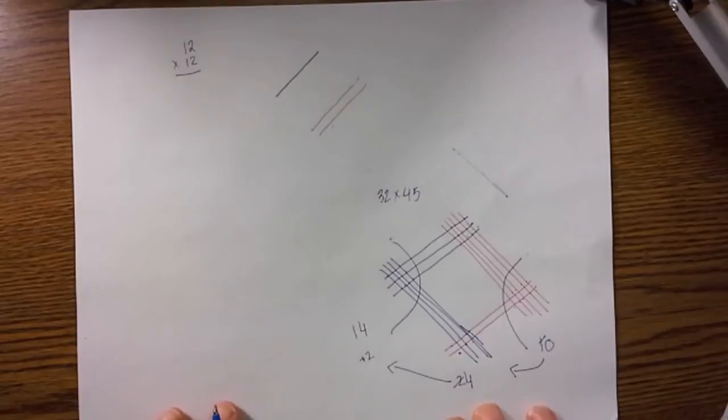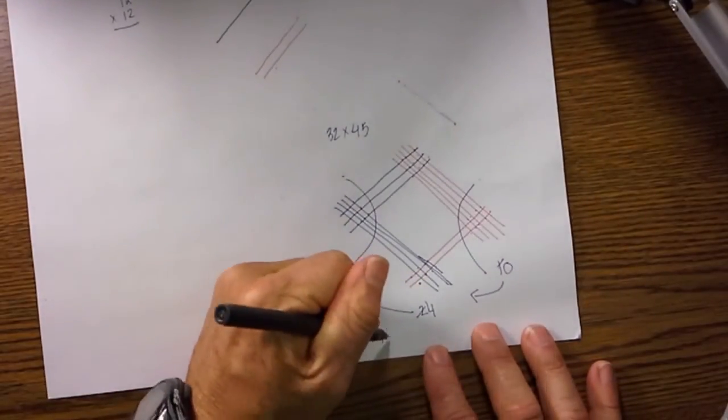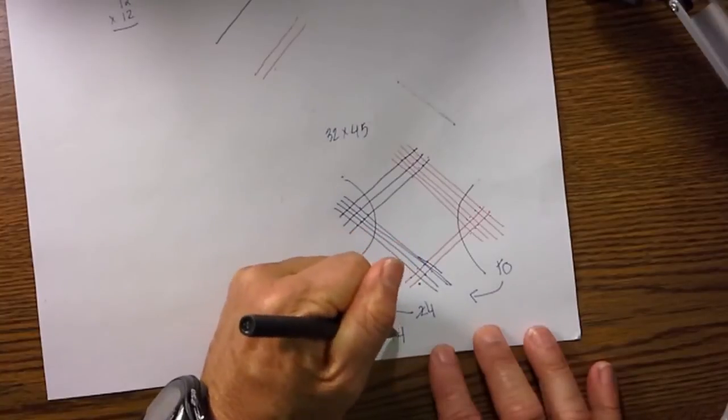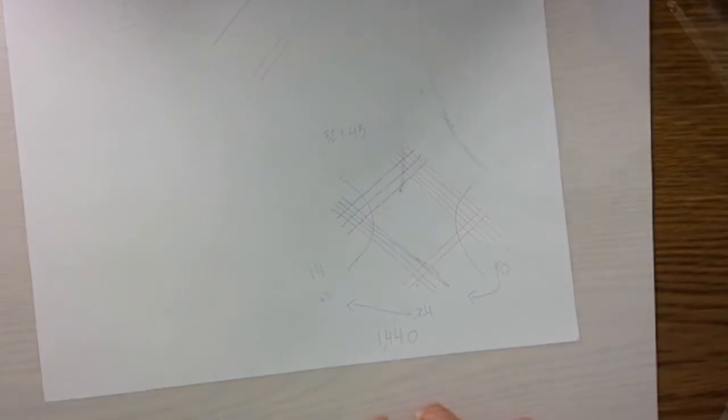Then what I do is again I can't have the two, I can't have a number like this, so I move two over to this last grouping. So I go one, two, three, four, five, six, seven, eight, nine, ten, eleven, twelve, plus two is fourteen. I write these numbers out, so I have one, four, four, zero, so it is one thousand four hundred and forty, equal to 32 times 45.